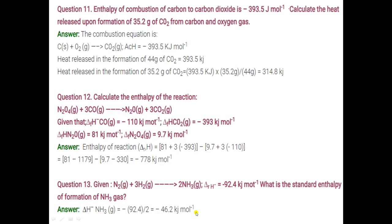This is question number 10. Question number 11: enthalpy of combustion of carbon to carbon dioxide is minus 393.5 kJ mol⁻¹. Combustion of carbon means carbon plus oxygen gives carbon dioxide. Calculate the heat released upon formation of 35.2 gram of CO₂ from carbon and oxygen gas. Write the equation and note that ΔH°combustion = minus 393.5 kJ/mol. Molecular mass of CO₂ is 44 gram, so for 44 gram this amount of energy is released.